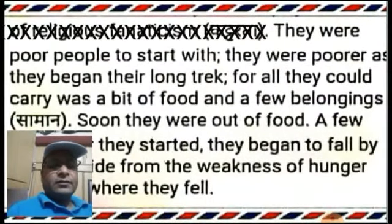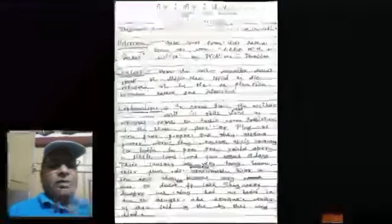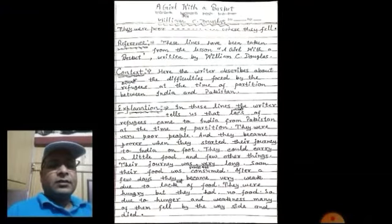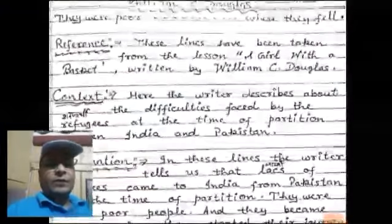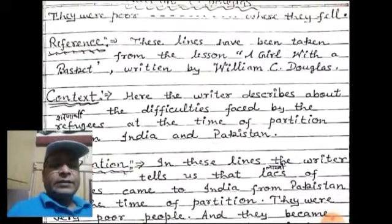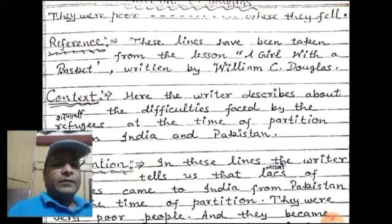Now you can see a passage on your screen. We shall write the explanation of this passage. The first point of this explanation is Reference (संदर्भ). These lines have been taken from the lesson 'A Girl with a Basket,' written by William C. Douglas.